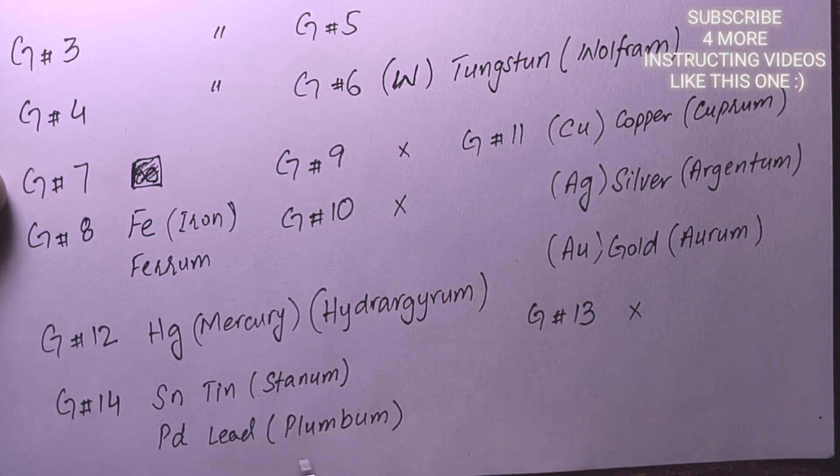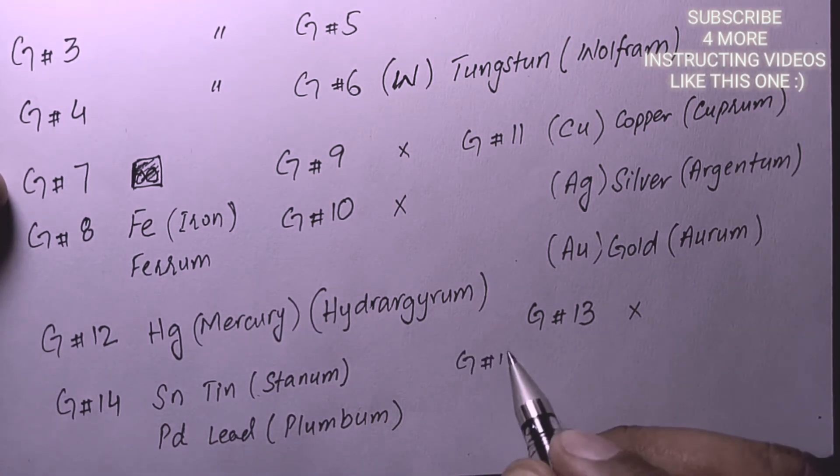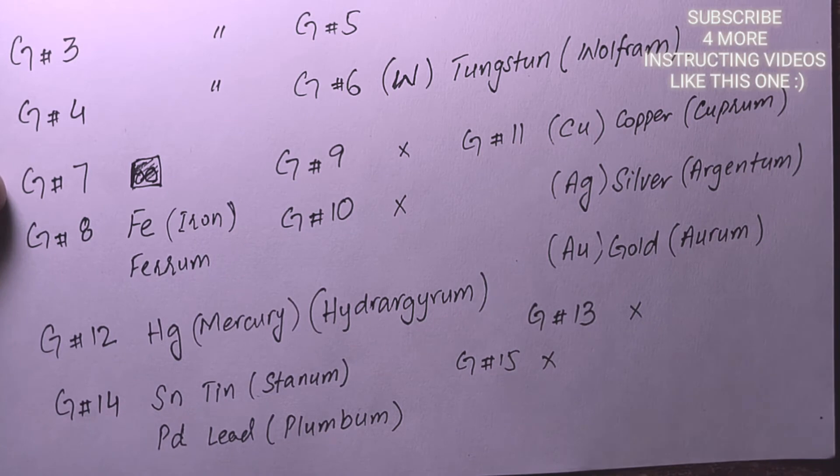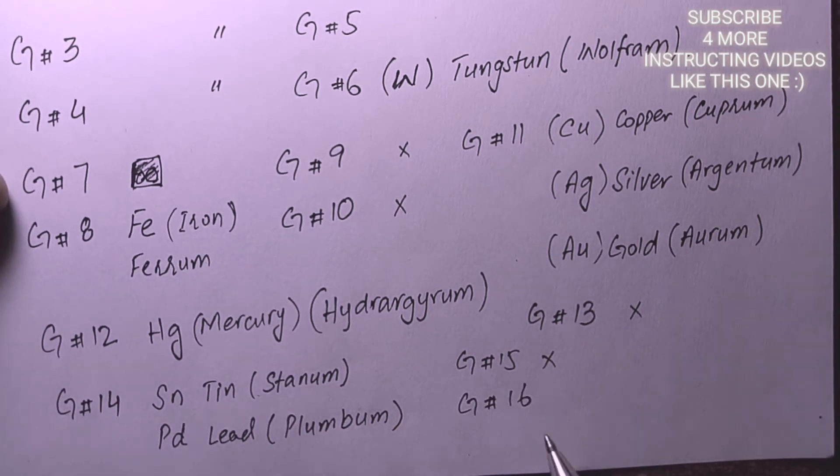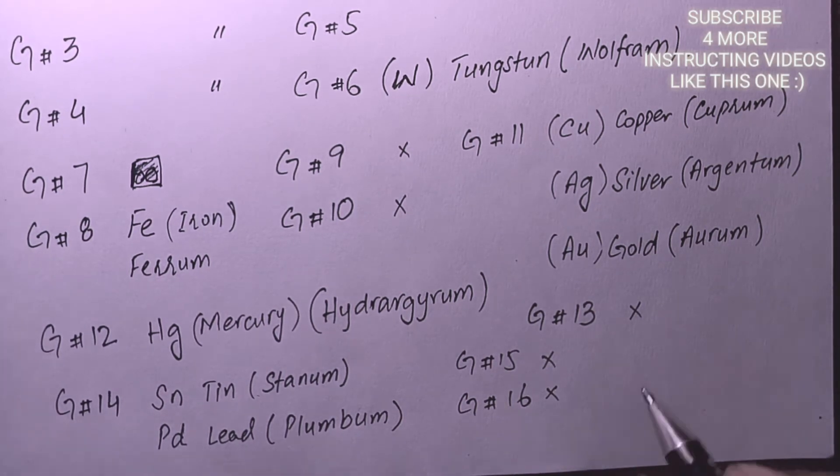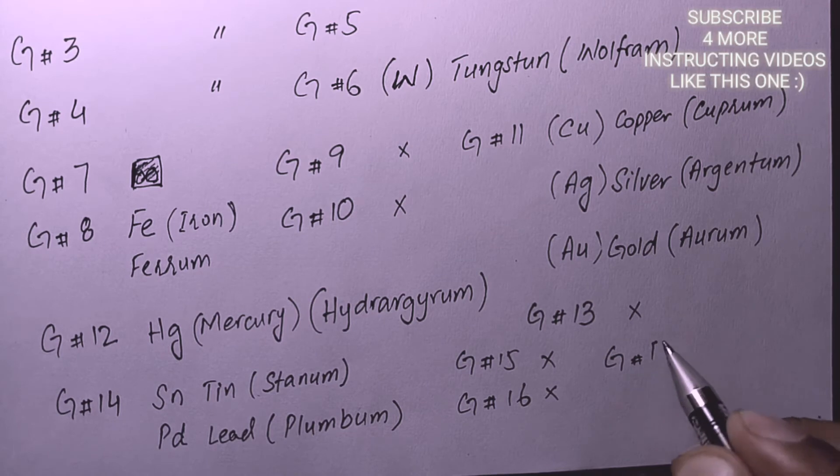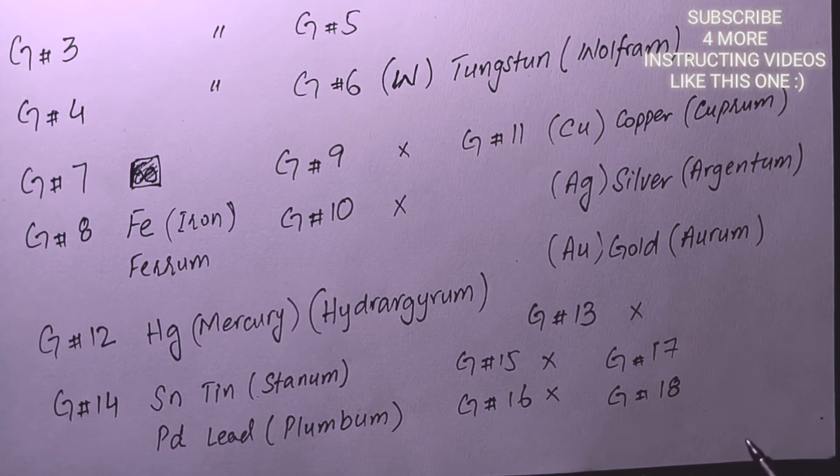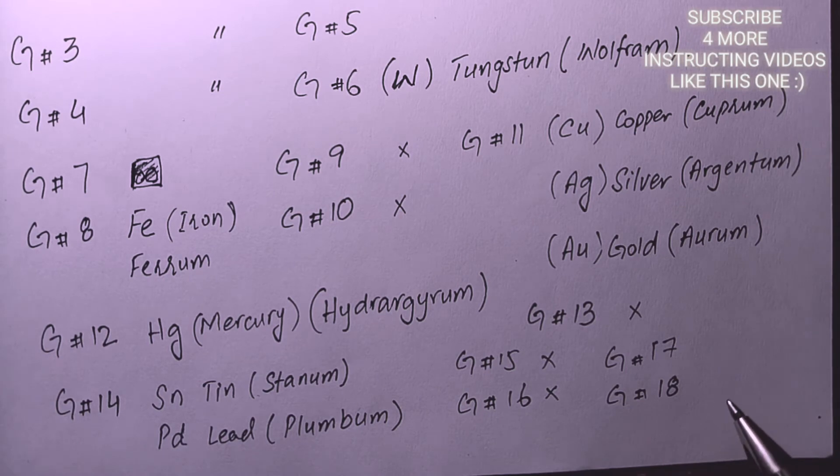Group 15 doesn't have any Latin or Greek named element. Group 16 also doesn't possess any kind of Latin or Greek named elements, same as group 17 and 18. Regarding the lanthanide and actinide series, in those groups we don't have any kind of Latin or Greek named elements.